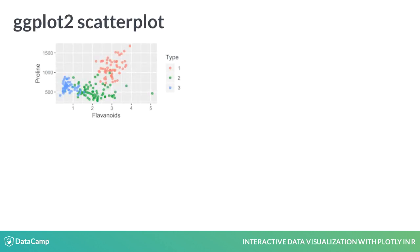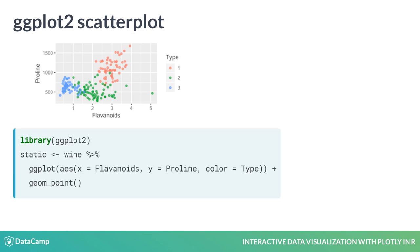We'll begin by converting the static scatter plot of proline against flavonoids we saw earlier to a Plotly interactive graphic. Remember that there are three parts to a ggplot graphic. First, we have the dataset — here we pass the wine dataset into the ggplot command using the pipe operator. Second, we map the variables in the dataset to aesthetics in the graph. Here we specify the mappings with aes(), x equals flavonoids, y equals proline, color equals type, telling the plot which variable defines each aesthetic.